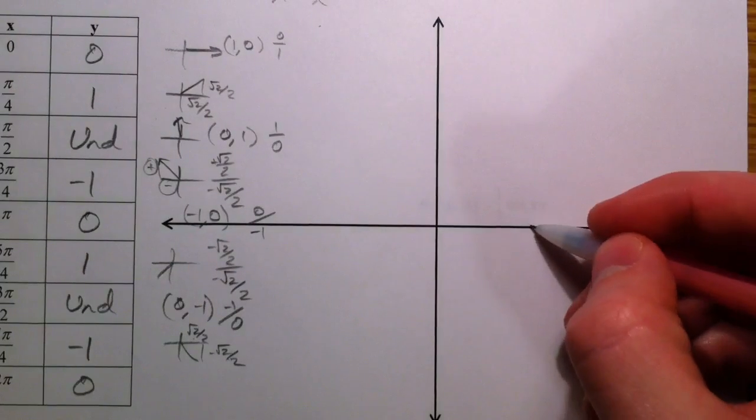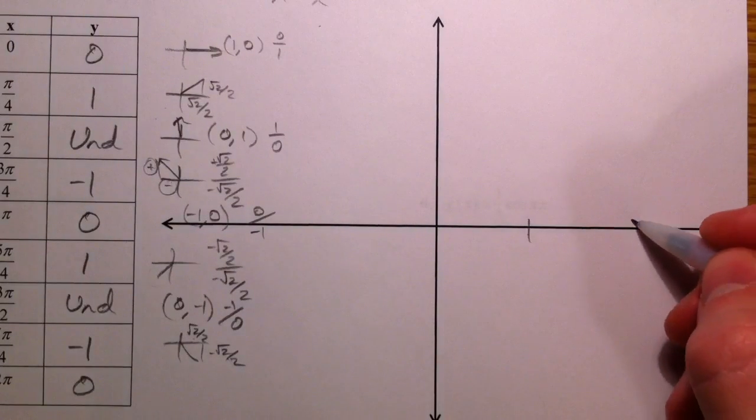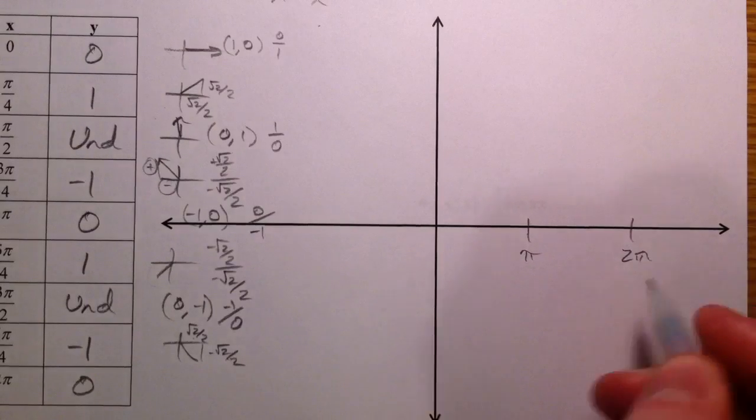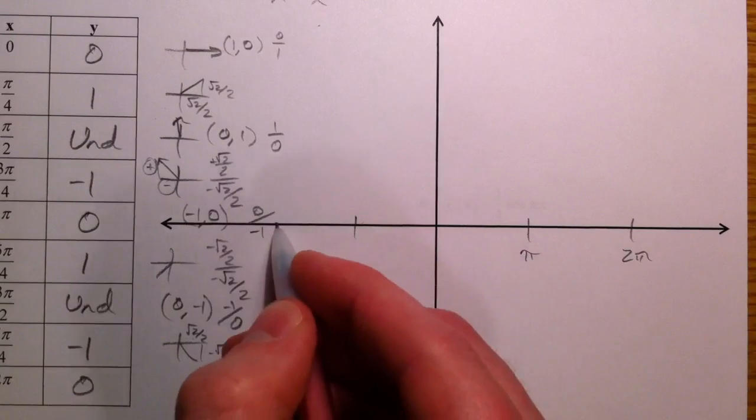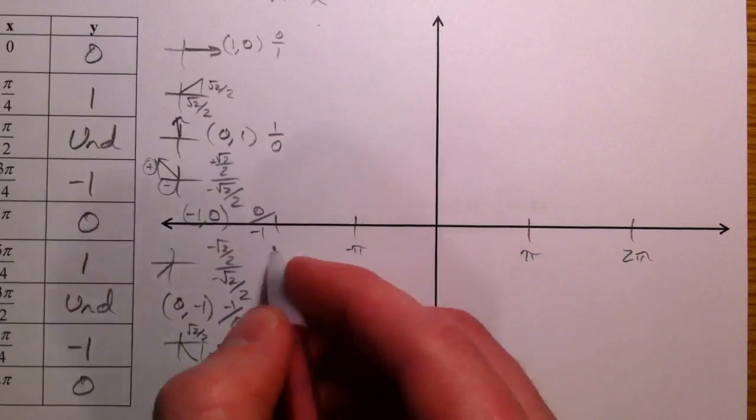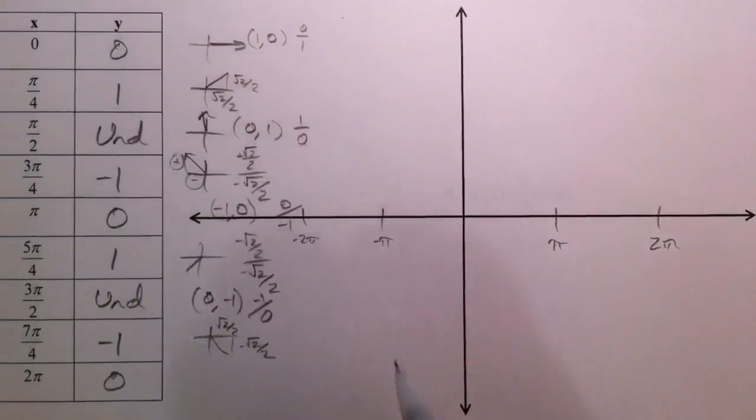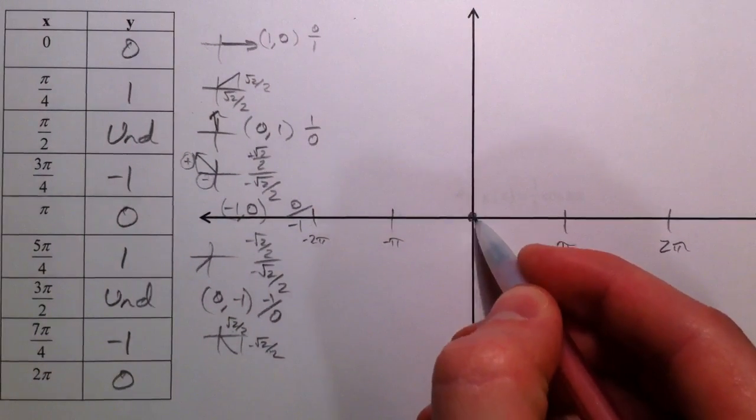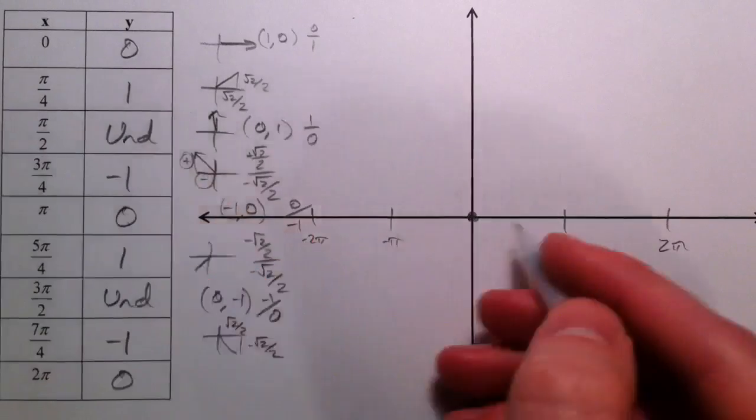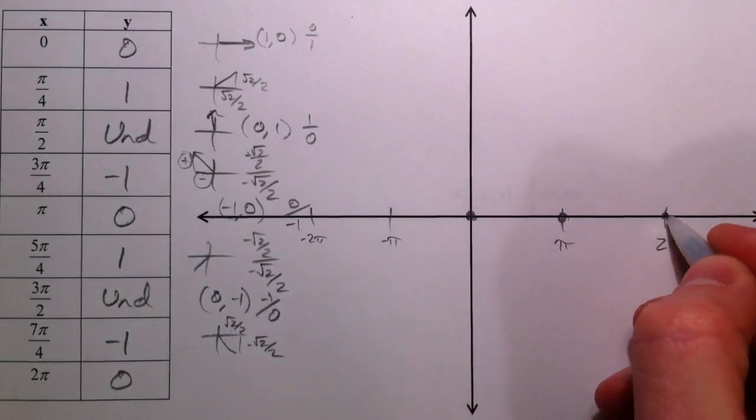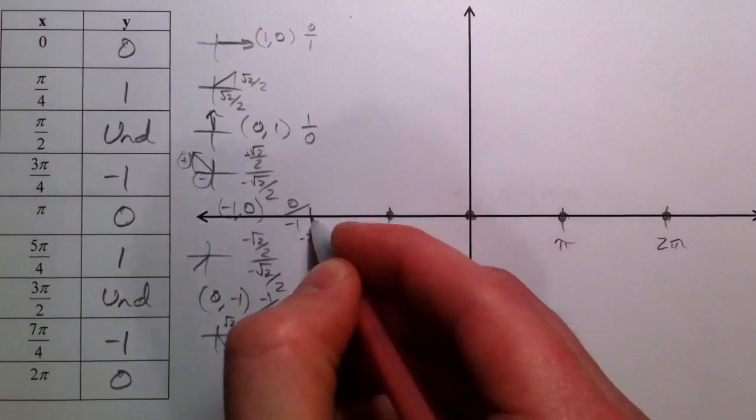I'm going to mark pi, 2pi, and on the other side as well, negative pi, negative 2pi. When x is 0, y is 0. When x is pi, 0, 2pi, 0, all of these are 0.